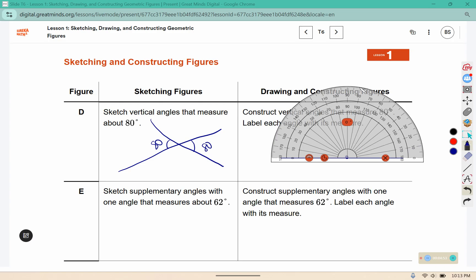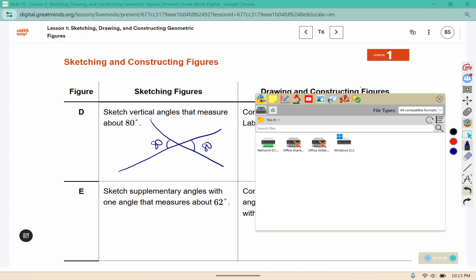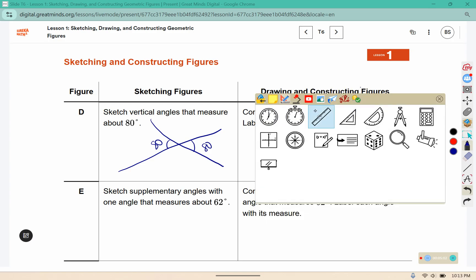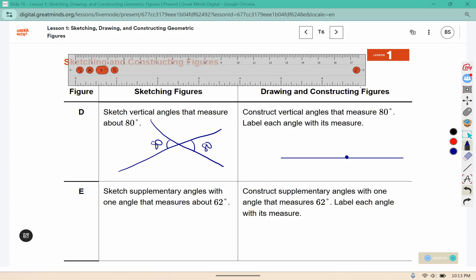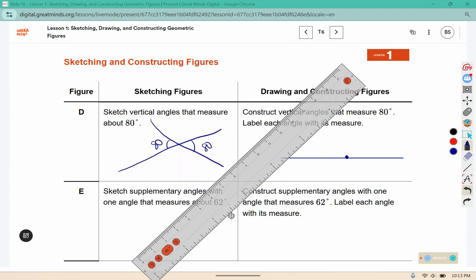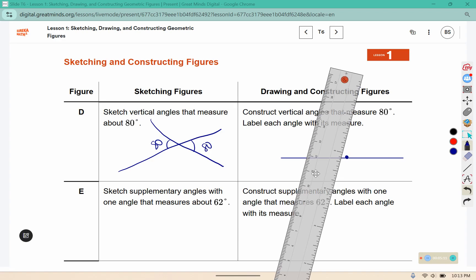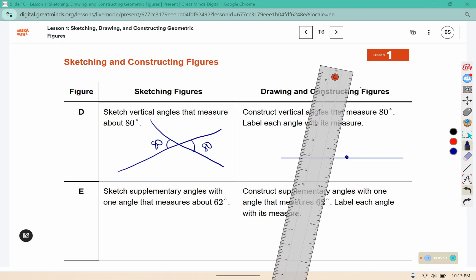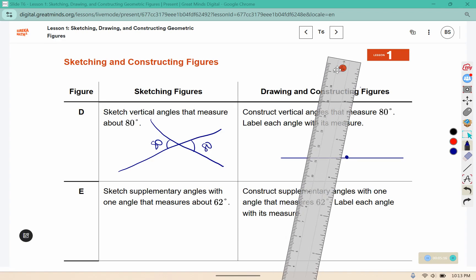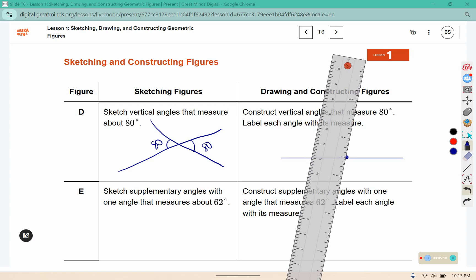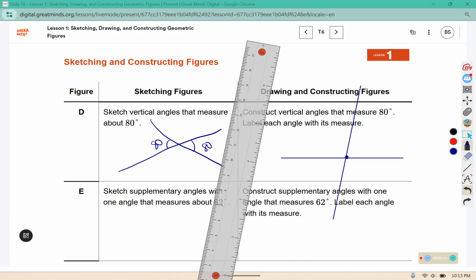Create a mark at 80, and again using our straight edge we're going to connect the mark we made and the dot through that section. So here we have the 80 degree angles.